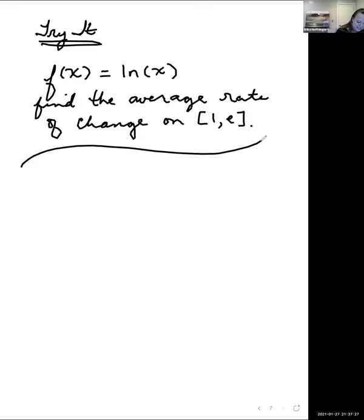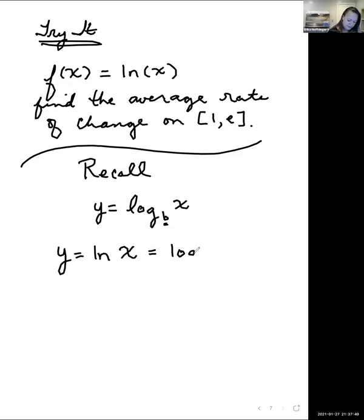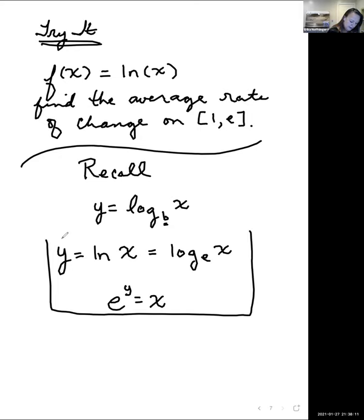Just in case you need a reminder about logarithms: the natural log, normally y equals log base e of x. If it's a natural log, this value is just e. So y equals natural log of x is the same thing as log base e of x. Recall that logarithms can be rewritten in exponential form. Another way to write this is e to the y equals x. These are all equivalent. A stipulation is that when we take the log of something, that value has to be greater than zero.